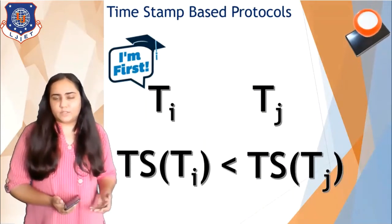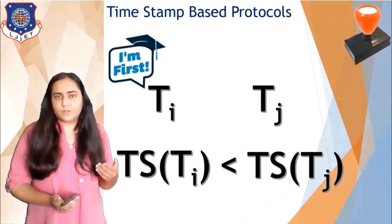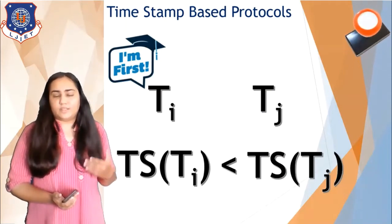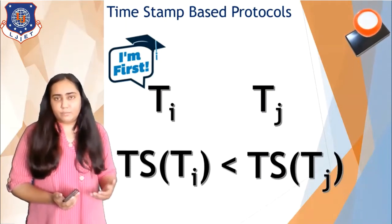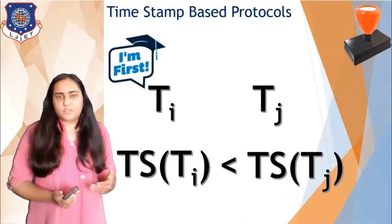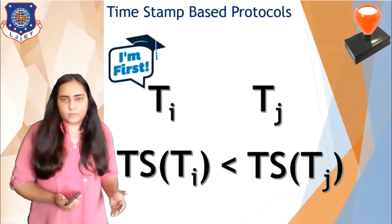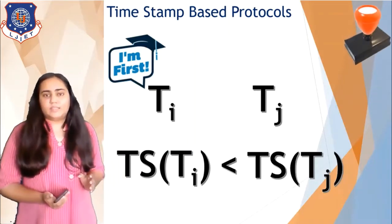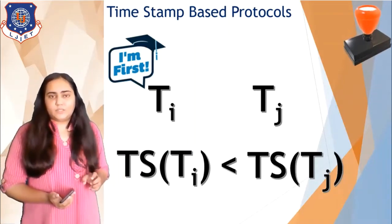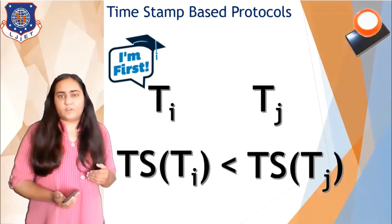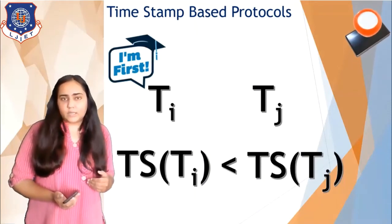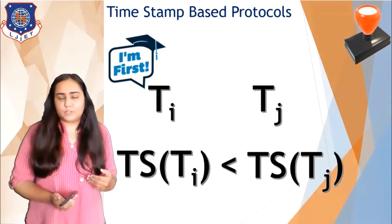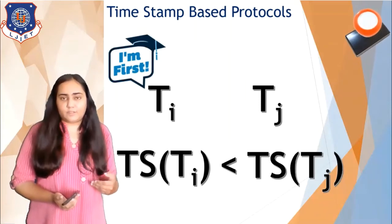We're not going to discuss more about how to give timestamps, but we will discuss how the protocol itself is implemented. Once timestamps are assigned, the only thing you need to remember is that the timestamp of a transaction that arrived early will be less than the timestamp of a transaction that arrived late.